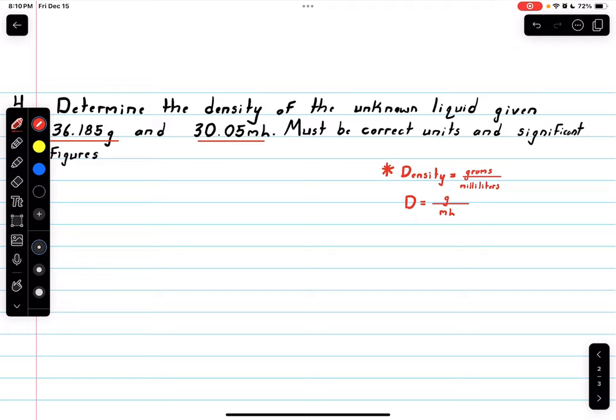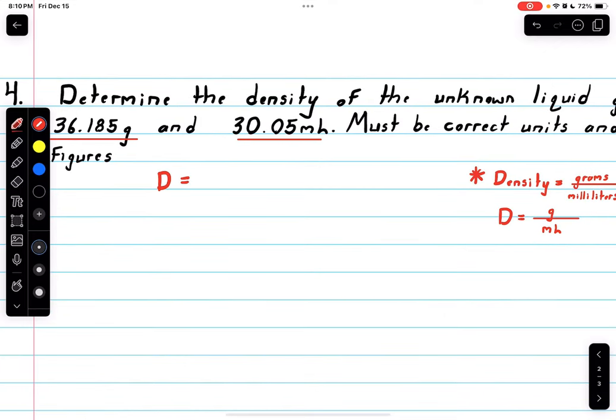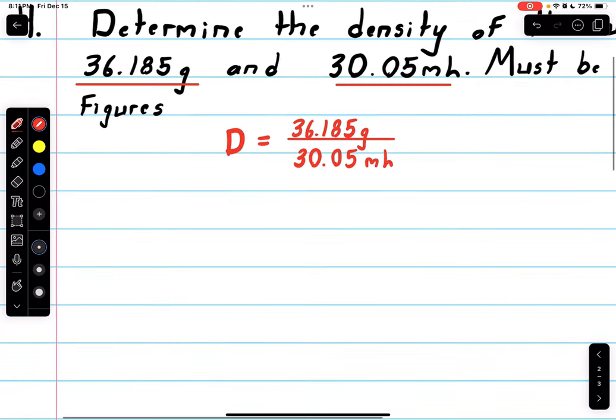Density is grams over milliliters or mass over volume. Mass is grams and volume is milliliters—that will become second nature with practice. Let's set this up: Density = 36.185 grams over 30.05 milliliters. What I like to do is always keep your units with that number so you don't lose track. I have mistaken that before on practice quizzes, and it's not fun.